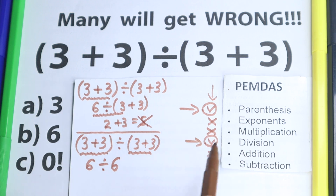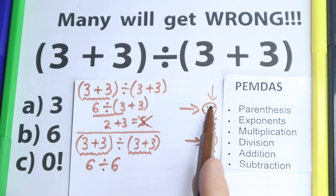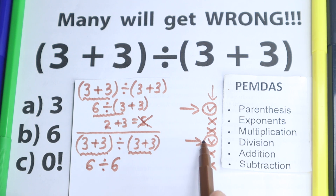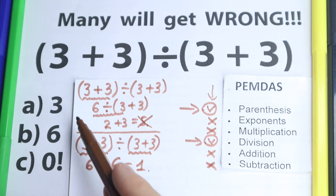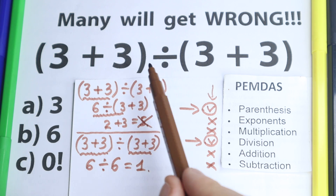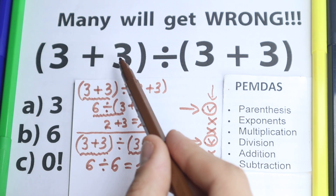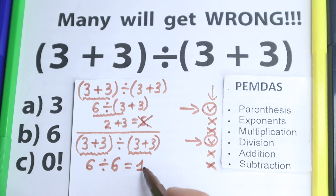So we have only two steps: parentheses and then division. After doing the parentheses, we have 6 divided by 6, which equals 1. The answer 5 is absolutely wrong and rejected. The correct answer is 1. But we need to choose a letter from our three options: a (which is 3), b (which is 6), and c — and 1 doesn't match 3 or 6.